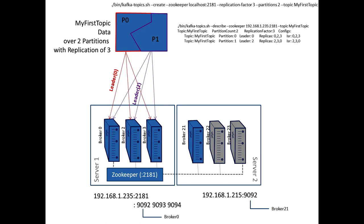You'll find that information in the config directory under Kafka, in the properties files. For the ZooKeeper there's a properties file, and for each of the brokers there will be a server properties file. The server file will have to have a different name for each one — server.properties for broker 0, server-2.properties for broker 2, and server-3.properties for broker 3. Because broker 21 is on a different server, it uses the default server.properties. They all have their own unique configuration file, and that's what you start and stop when you start and stop those brokers.